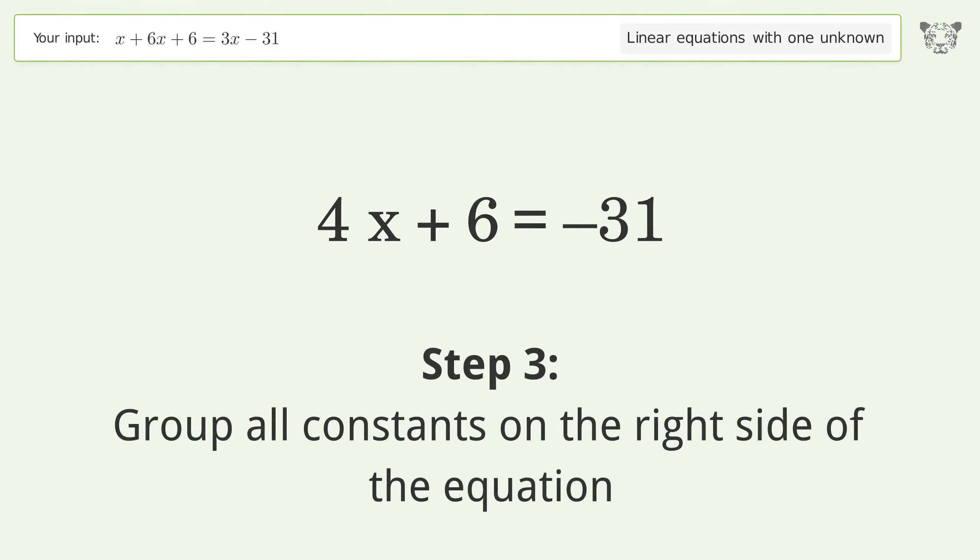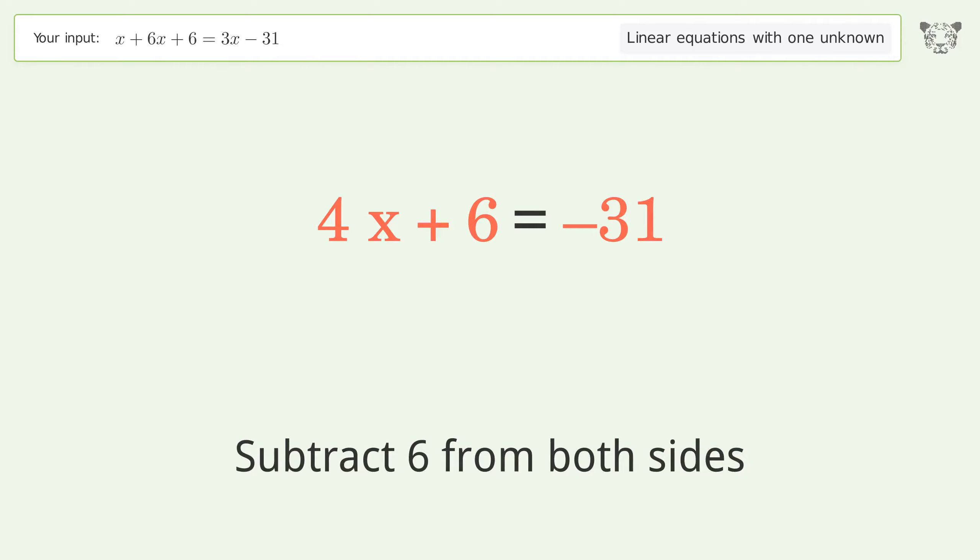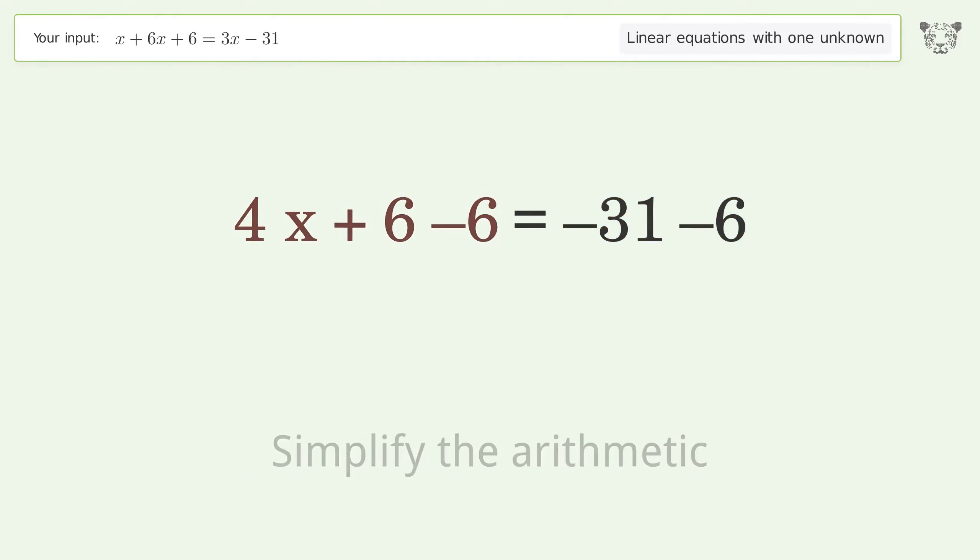Group all constants on the right side of the equation. Subtract 6 from both sides. Simplify the arithmetic.